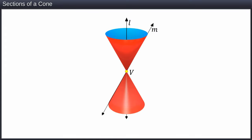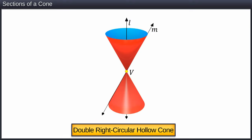Such a cone is called a double right circular hollow cone. In this module, we will refer to this solid figure simply as a cone.